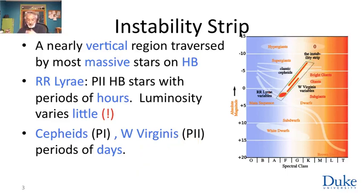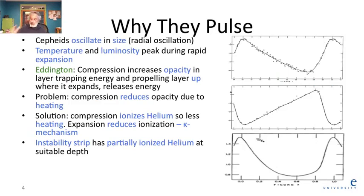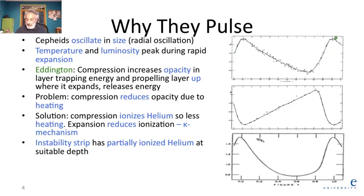Cepheids and their population two cousins have periods of days, and modeling those is an interesting problem in physics — they will turn into something very useful later. It was understood rather early that they were not eclipsing binaries, from the shape of the light curve. This is from a famous 1931 paper showing the light curve of a Cepheid variable, which does not match well onto an eclipsing binary.